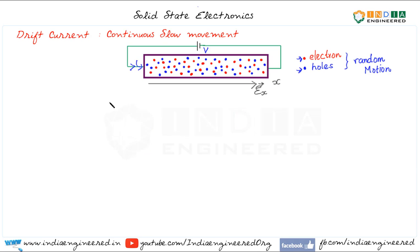We will see the relationship between drift current density and electric field. We won't be deriving this relation — that we will do in another video — but let's see the equation and understand the important relationships in drift current. Let's consider the drift current due to electrons, denoted by Jn, where n denotes the negative charge of electrons.